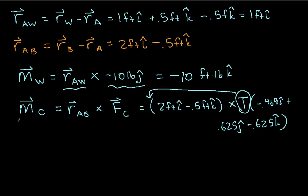So this is going to be T times 0.313 feet i hat plus 1.485 feet j hat plus 1.25 feet k hat. So this is again the moment about point A generated by the cable.